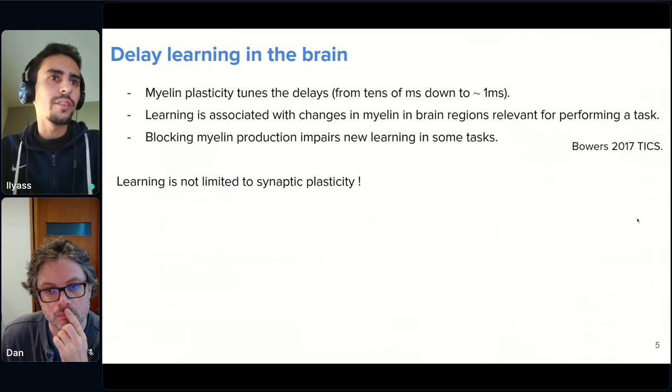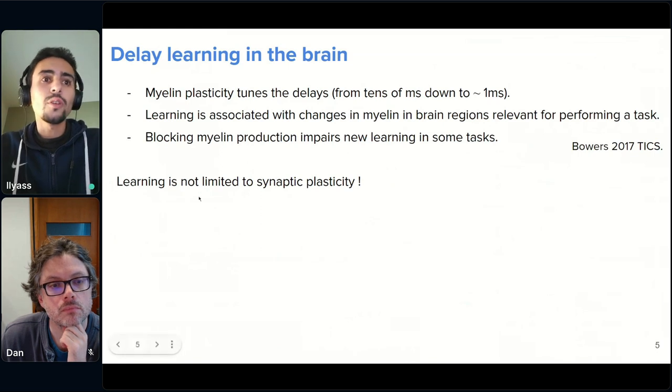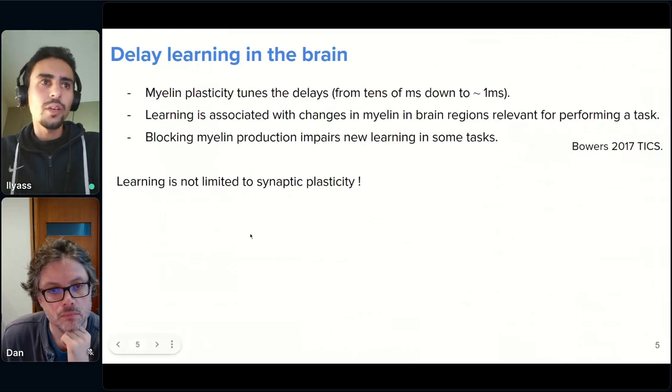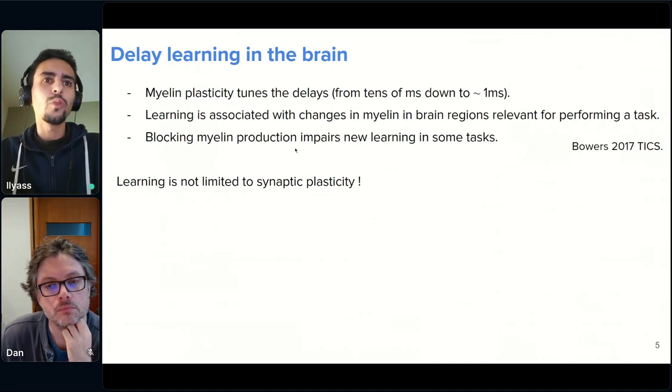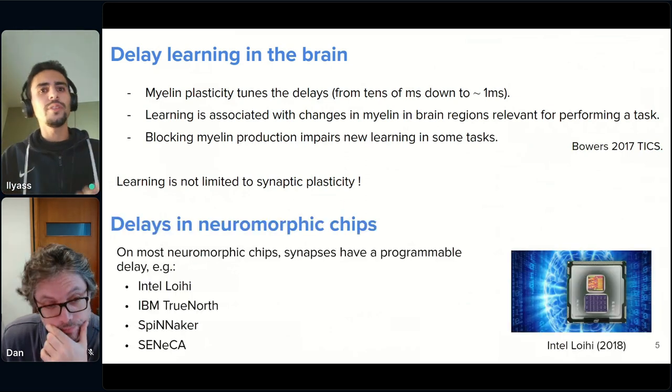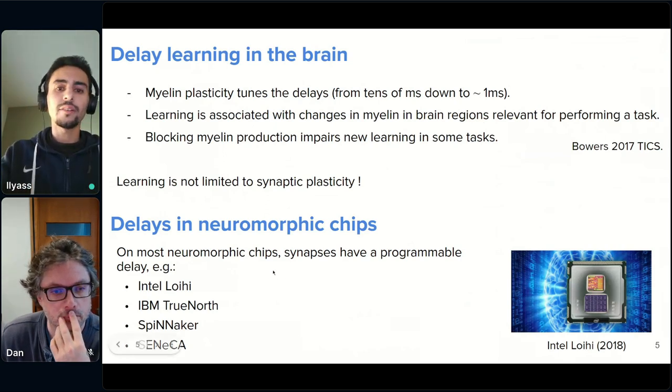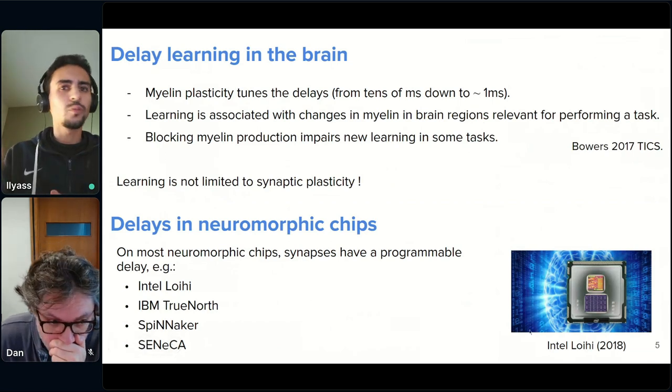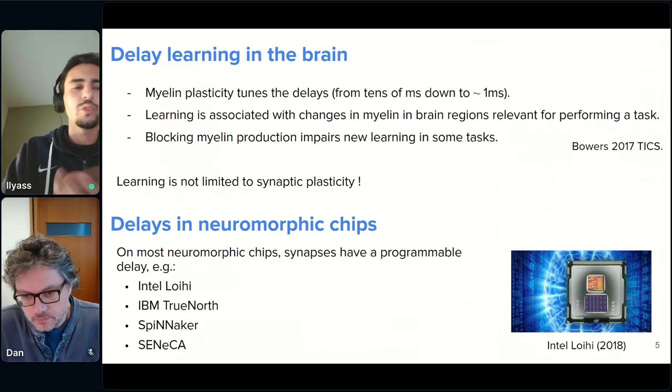Okay, so more motivation for why delays are important. There has been a lot of studies that showed that learning is not limited to synaptic plasticity in the brain, but there is a lot of myelin plasticity that is equivalent to delays, to conduction delays, that also occurs when learning new tasks. Another important point that was talked about in the previous talk is that delays are compatible with most neuromorphic chips, and are easily added to a normal SNN.